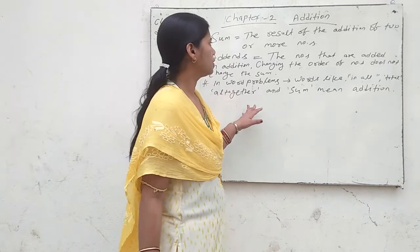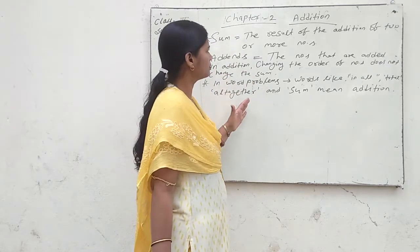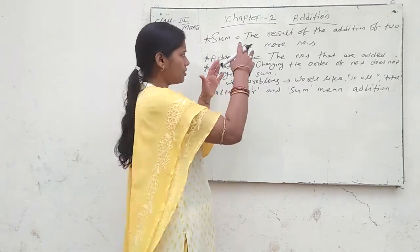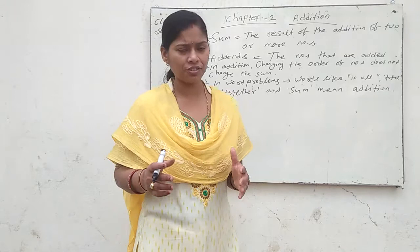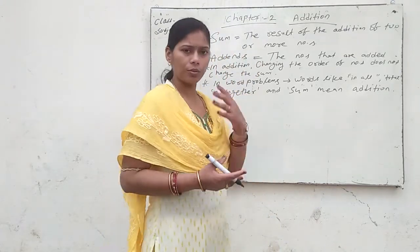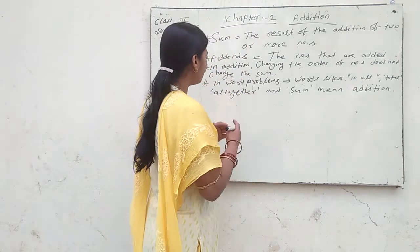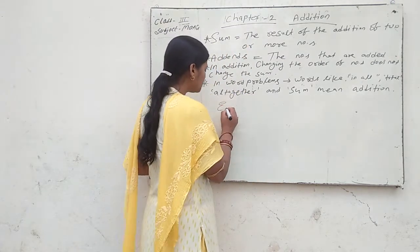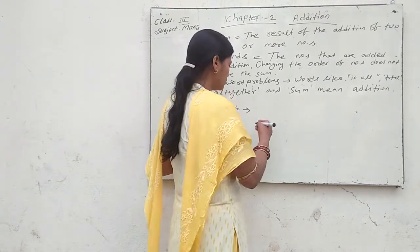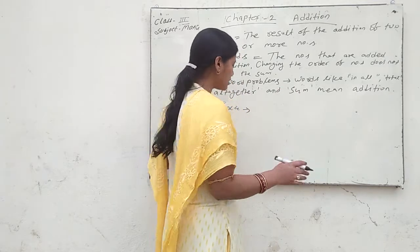Now we will discuss some basic rules of addition. First we will go through the rules, and then one by one we will discuss more points. The first rule is about adding 2-digit numbers.